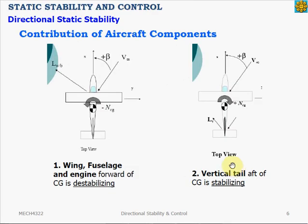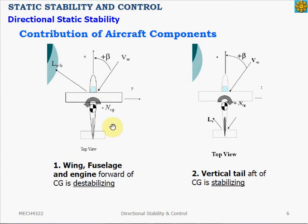In general, the wing, the fuselage, and the engine that are located forward of the center of gravity would cause a destabilizing motion in the directional axis. For example, this is the aircraft center of gravity, and all of these components — the wing and the engine — are all forward of the CG and would cause a destabilizing effect. Meanwhile, the vertical tail, located aft of the center of gravity, is stabilizing.